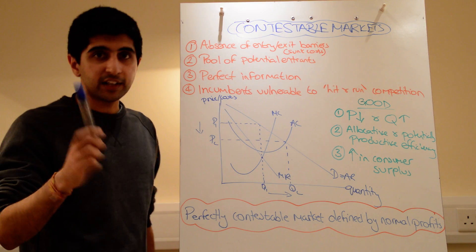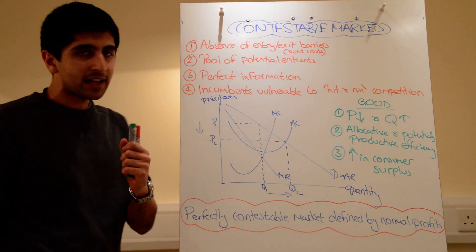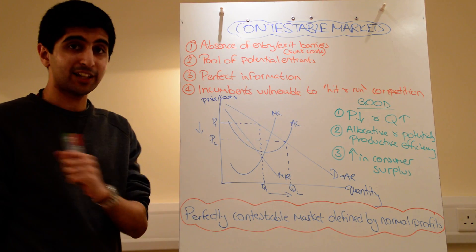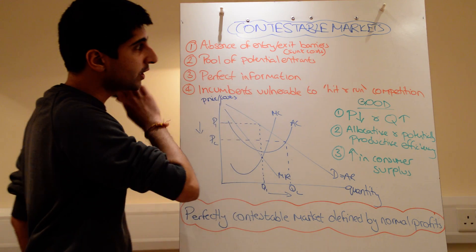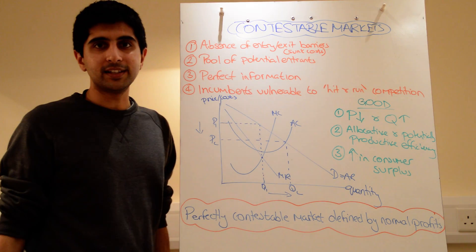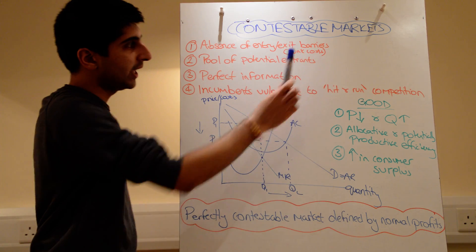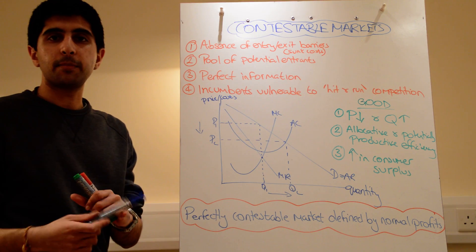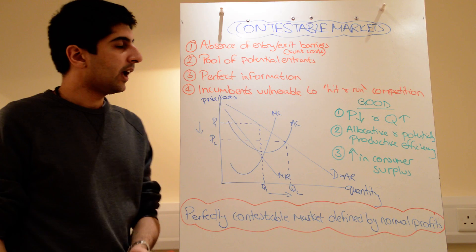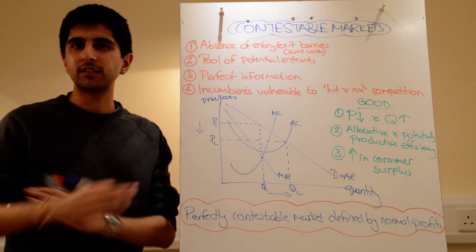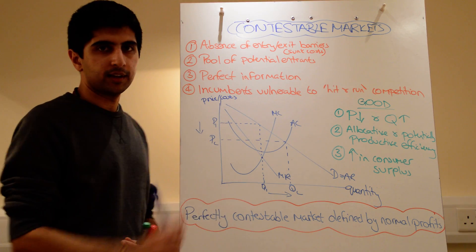Number one is the defining feature. In contestable markets or in perfectly contestable markets, there are absolutely no entry or exit barriers. Especially sunk cost, which is a major barrier to entry, especially advertising, brand loyalty. This kind of thing just doesn't exist in contestable markets anymore.